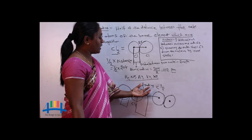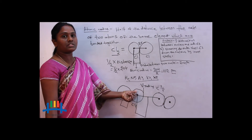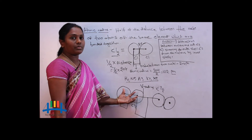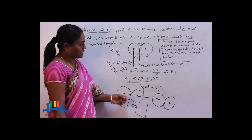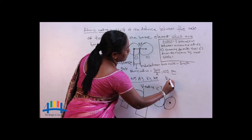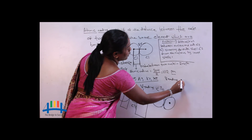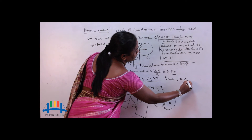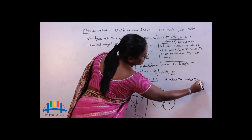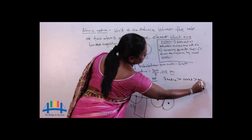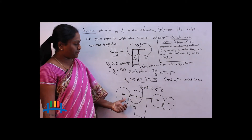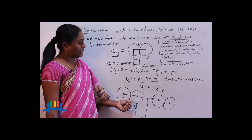That distance is called the van der Waals radius. The reason it is called van der Waals is that these are weak forces present between gas molecules. That is why van der Waals radius is longer than covalent radius and metallic radius, due to the presence of weak forces between the two elements or gas molecules.